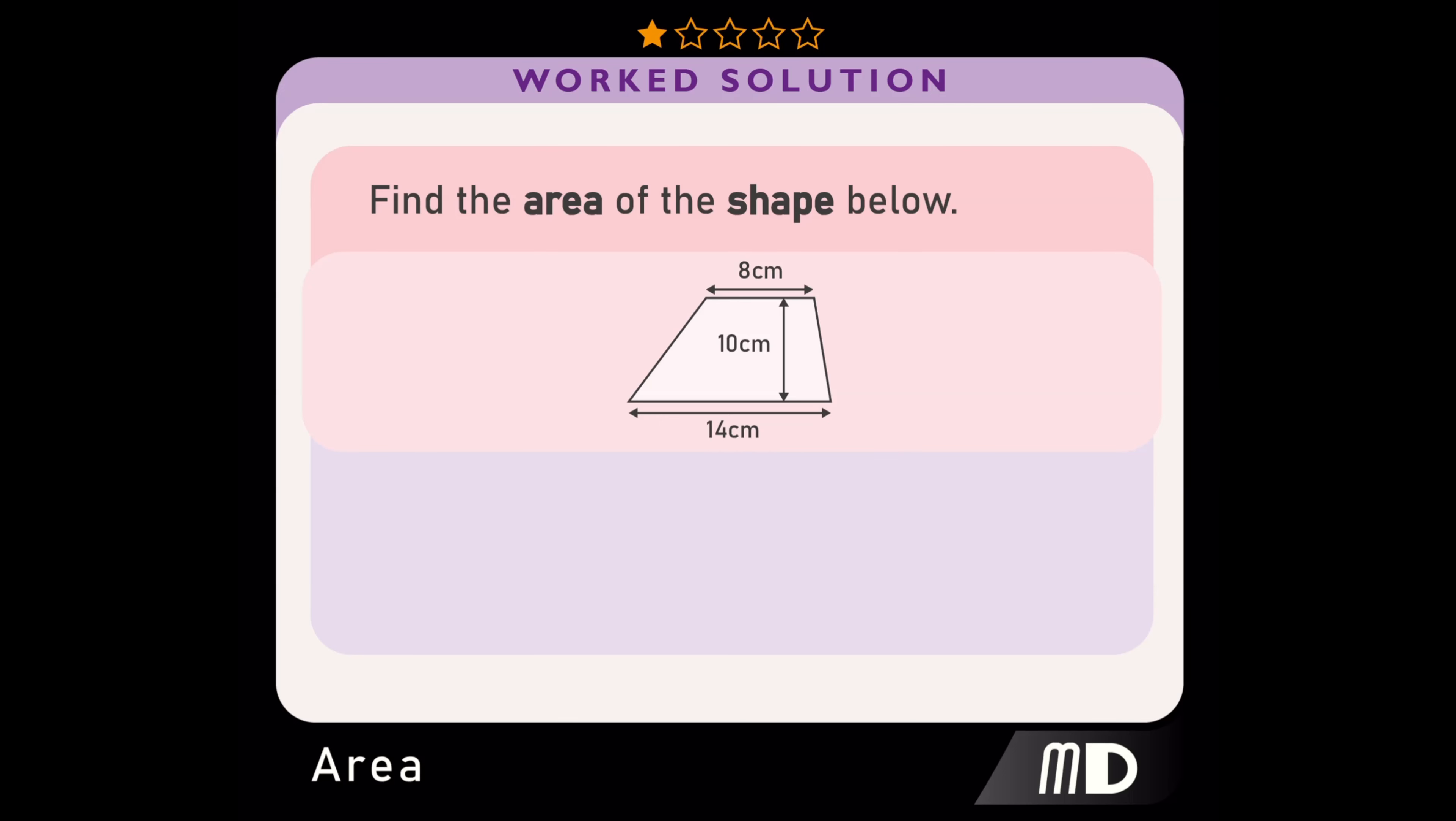To find the area of a trapezium, we start by adding the parallel sides together. That means adding 8 and 14 together, which gives us 22. Let's write that down: 8 plus 14 equals 22.